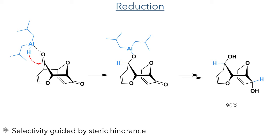This dimer was taken forward and reduced by lithium-aluminium hydride. This bulky reagent adds the hydride to the less sterically hindered concave side of the dimer, producing the diol in a 90% yield.